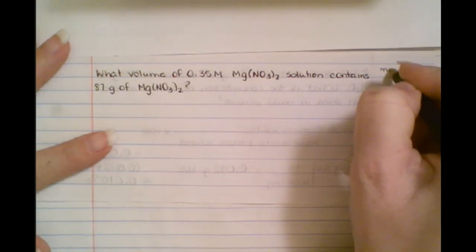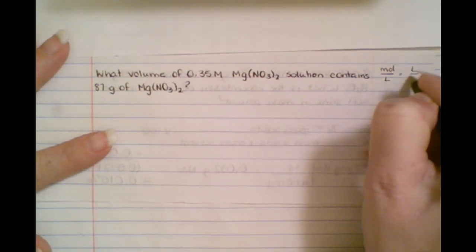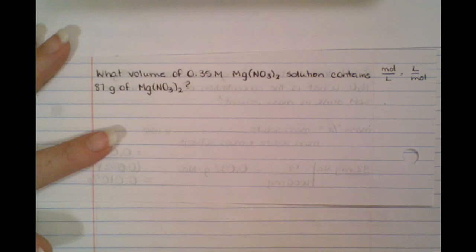Remember, that's a fraction. So you can also write it as liters per mole, because it's just a ratio. You can write it whichever way, as long as you place the 0.35 with the moles. And it also has the grams in it.